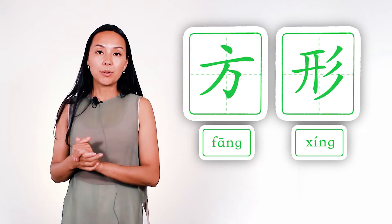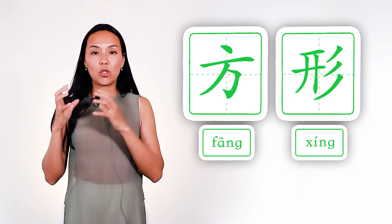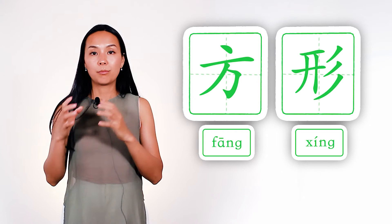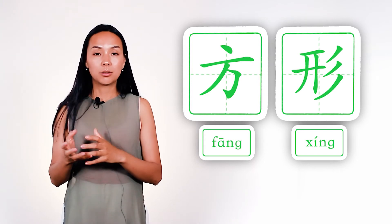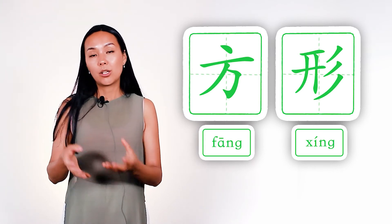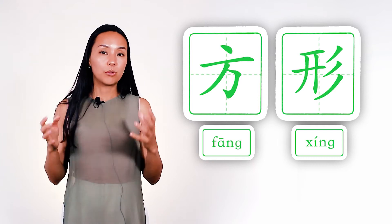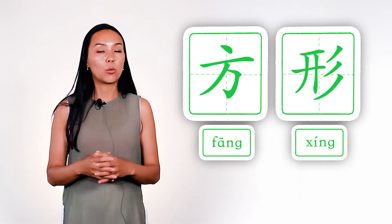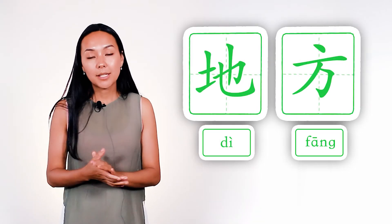The second example is 'square-shaped' — fang-xing. Fang means square, xing means shaped or filled, and together: square-shaped.